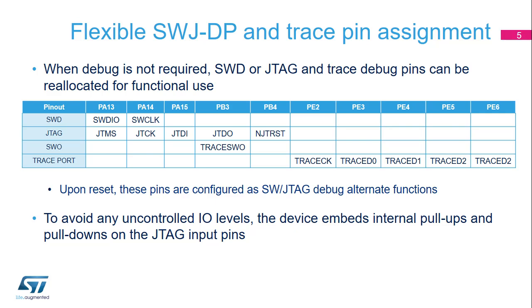NJTRST can be left disconnected but cannot be used as general-purpose GPIO without losing debugger connection. Note that the parallel trace port is not assigned, except if explicitly programmed by the debugger host.